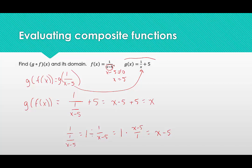When we plug f into g, we end up with x — that's a special result. This means f and g are probably inverse functions of each other, though we'd need to check the other direction and verify that f of g of x also equals x. As for the domain, since the result is linear, the only restrictions are those from f — so the domain is all real numbers except 5.